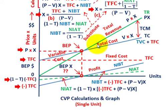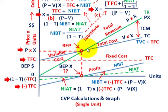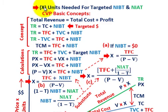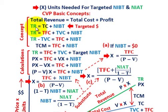For our profit lines, the net income before taxes is shown in blue, shifted below the costing lines, and net income after taxes is shown as a dashed green line. The basic CVP concept is that total revenues equals total cost plus profit. So total revenues TR equals total fixed cost plus total variable cost plus the targeted net income before taxes.